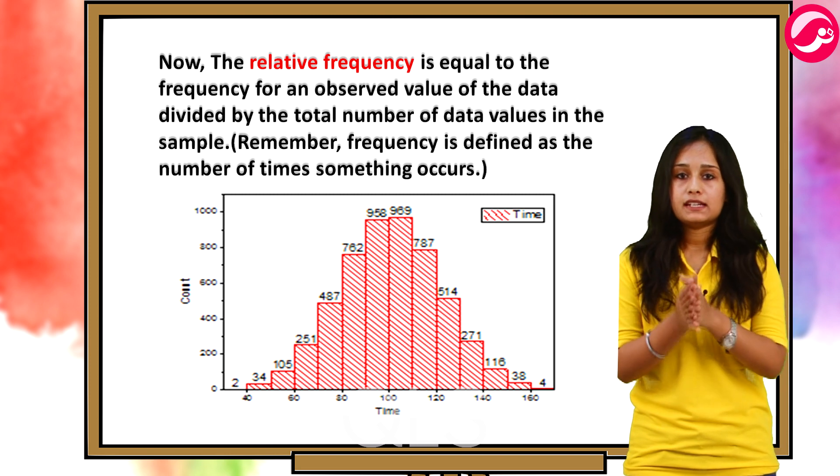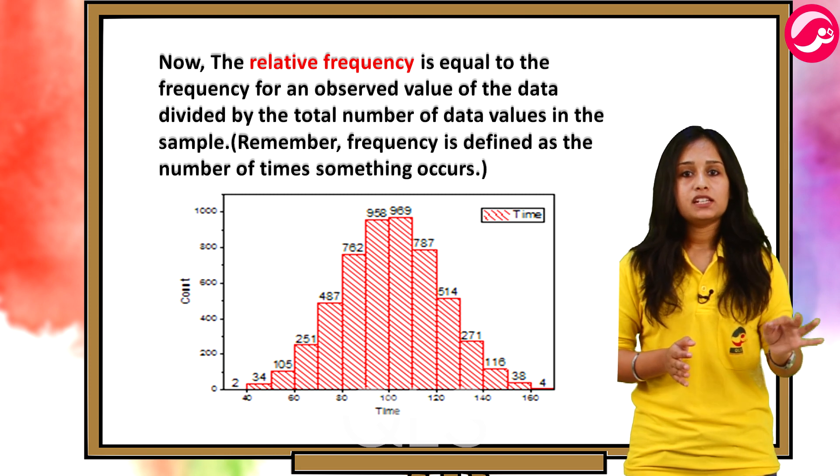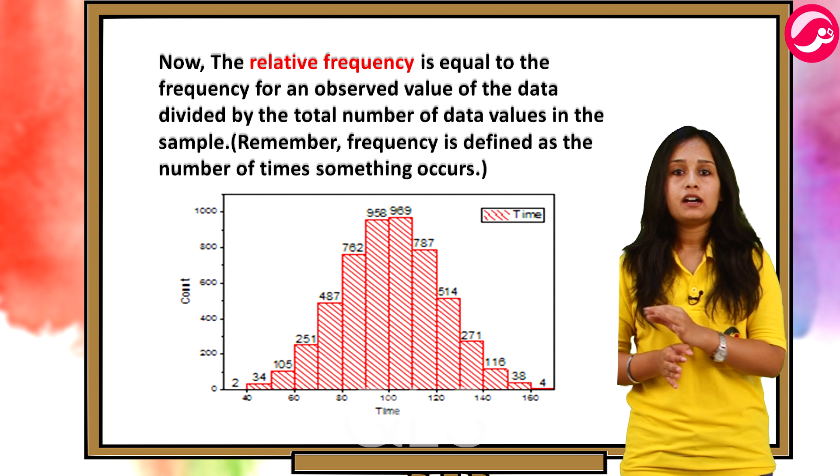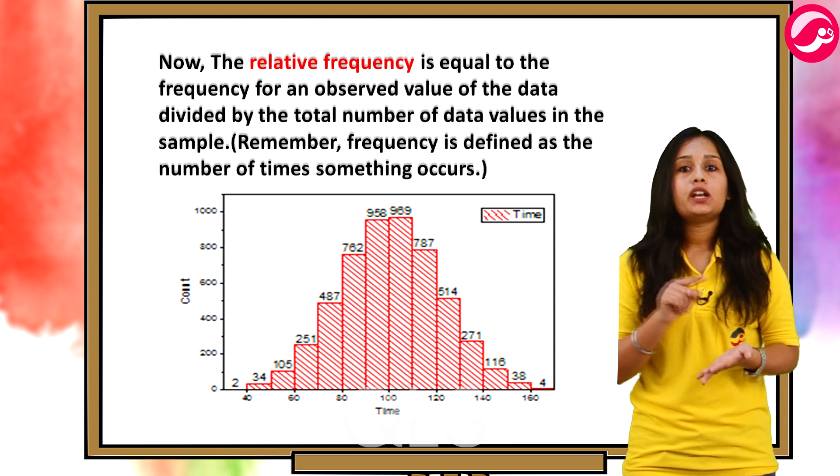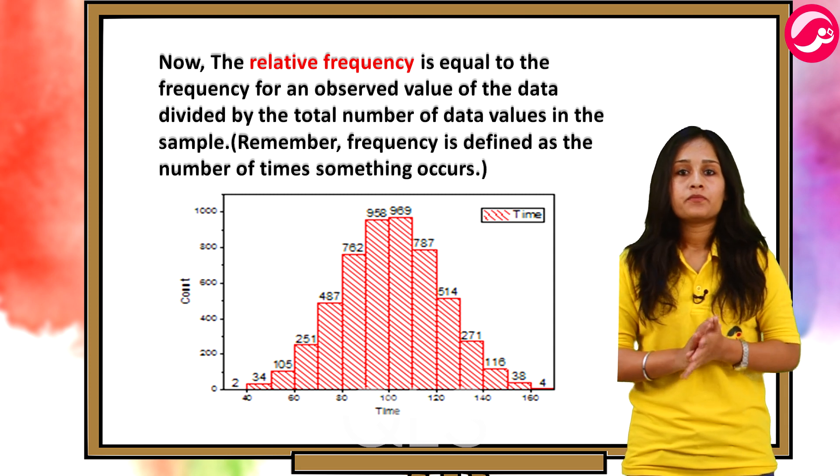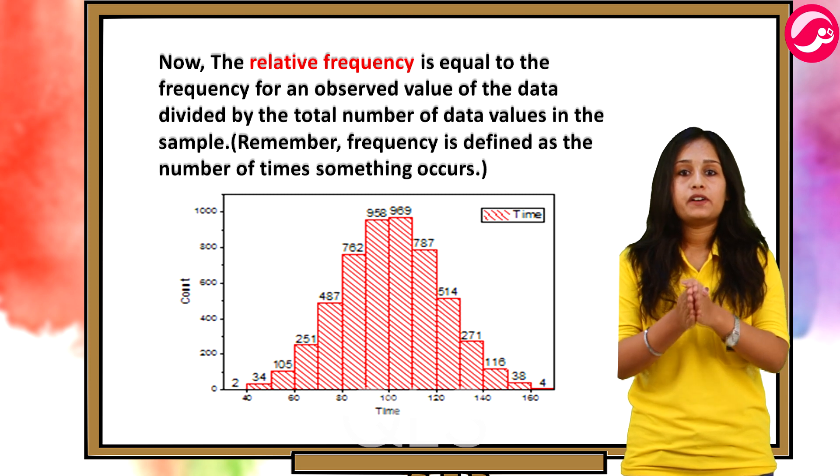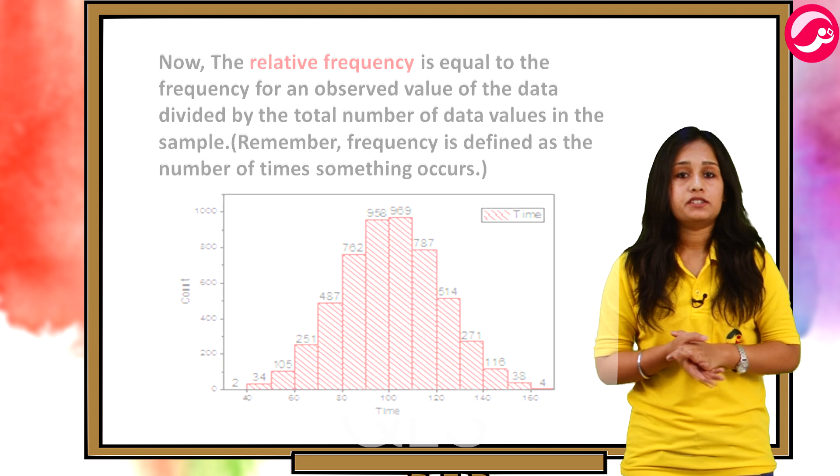Now, the relative frequency is equal to frequency for an observed value of the data divided by the total number of data values in the sample. Remember that frequency is defined as the number of times something occurs.